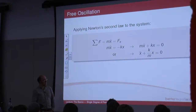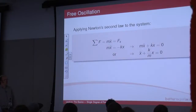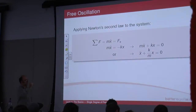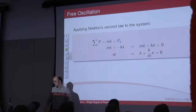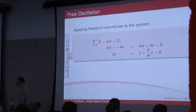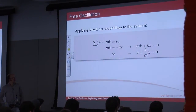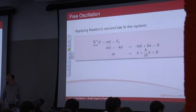We put kx on the other side so it becomes plus kx, and then we divide everything by m. Zero divided by m is zero, so that disappears, and we've got x double dot plus k upon m times x equals zero.